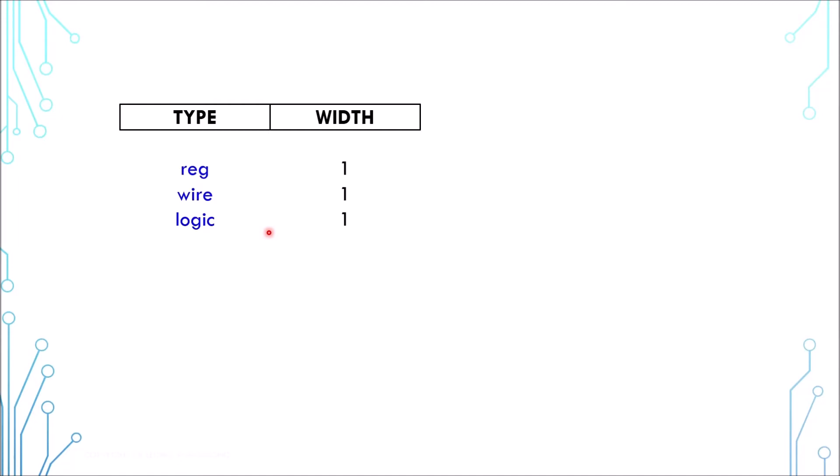Here comes a new one, literally called bit. You may ask why another one? Bit is slightly different—it supports 0 and 1 as a 2-state type, unlike reg, wire, or logic, which are 4-state types. That means they can support 0, 1, high impedance Z, and unknown X.